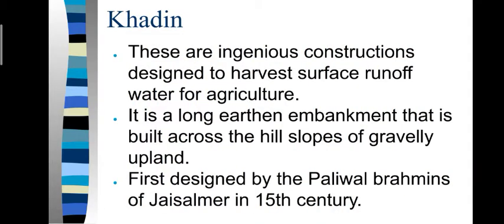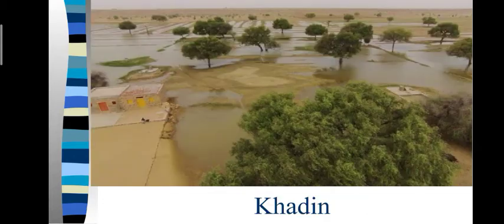Khadins are indigenous construction designs to harvest surface runoff water for agriculture. It is a long earthen embankment built across the hill slopes of gravelly uplands. First designed by Paliwal Brahmins of Jaisalmer in the 15th century.